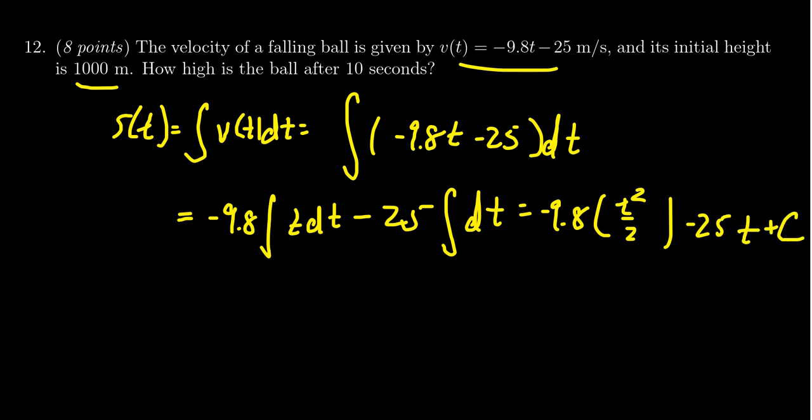We also have this unknown constant c that we have to deal with in just a second. Let's simplify this a little bit better. So s(t) is equal to, well, if you take 9.8 and divide it by 2, you're going to get 4.9. So -4.9t² - 25t plus a constant c.